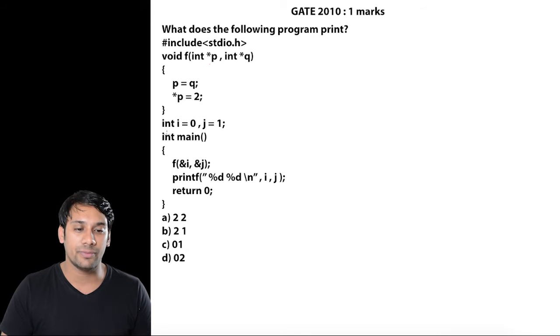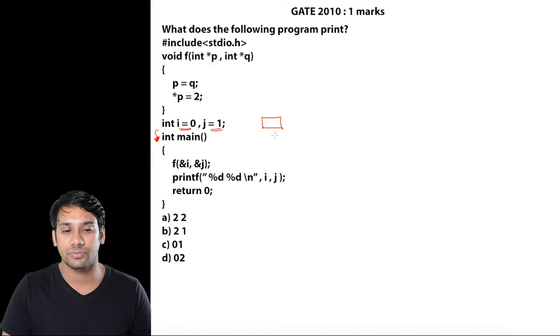We'll start executing from the main function, but before that, note that i and j are both global variables. Let's suppose variable i is storing zero and variable j is storing one. The address of variable i is 1000 and the address of variable j is 2000.